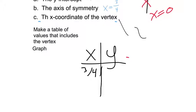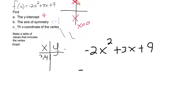So they want us to use a table of values that includes the vertex, so I need to plug in 3 fourths in for x. So I'm plugging 3 fourths in for x.